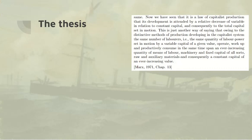This is what Marx says: now we have seen that it is a law of capitalist production that its development is attended by a relative decrease of variable in relation to constant capital, and consequently to the total capital set in motion. This is just another way of saying that owing to the distinctive methods of production developing in the capitalist system, the same number of labourers — the same quantity of labour power — set in motion by variable capital of a given value, operate and productively consume, in the same time span, an ever-increasing quantity of the means of labour, machinery and fixed capital of all sorts, raw and auxiliary materials, and consequently a constant capital of ever-increasing value.